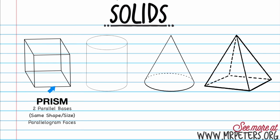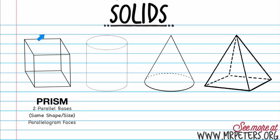The bases are the same size and shape — that makes it a prism. And it also has parallelogram faces. These faces are parallel to each other, these faces are parallel to each other, and the front and the back are parallel to each other. That's what a prism is.